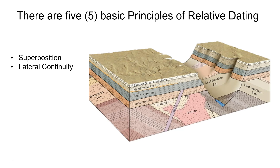The next principle is the principle of lateral continuity. If you notice that a canyon is cut out and on the opposite side you see the same exact rock layers, lateral continuity basically says that if you have the same rock layer on the other side of an event — like stream erosion removed that rock layer — the rock on the other side is the same age as the rock on the closer side. So where it's labeled Skinner Gulch limestone, the rock layer on the other side is also the Skinner Gulch limestone and therefore the same age.